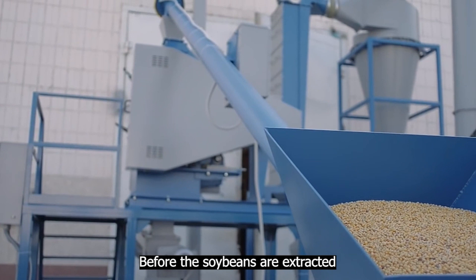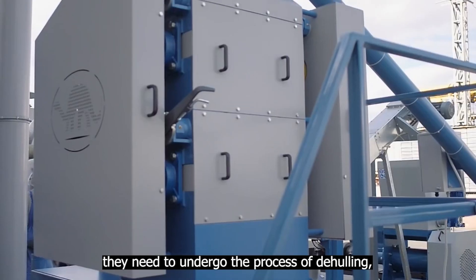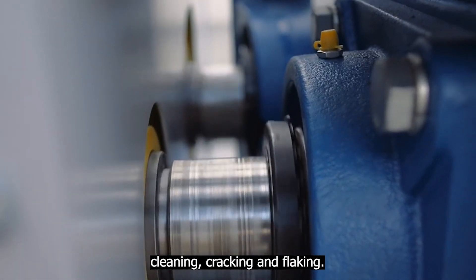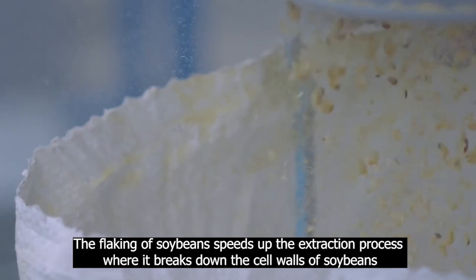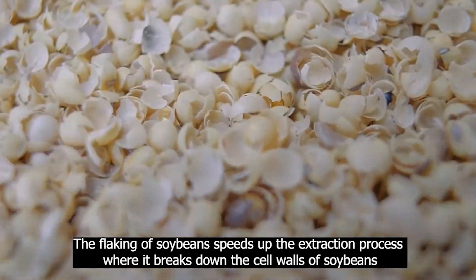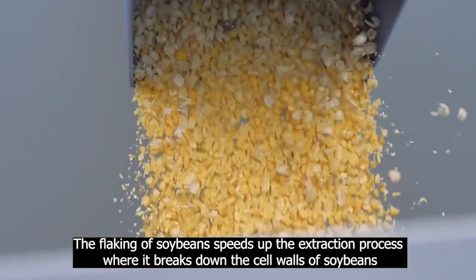Before the soybeans are extracted, they need to undergo the process of dehulling, cleaning, cracking, and flaking. The flaking of soybeans speeds up the extraction process where it breaks down the cell walls of soybeans, which allows the solvent to come into direct contact with the oil.